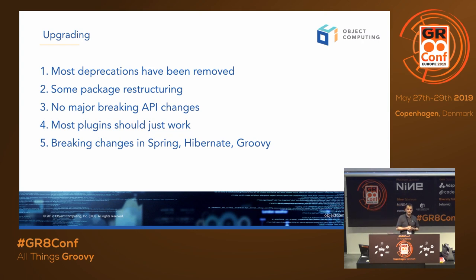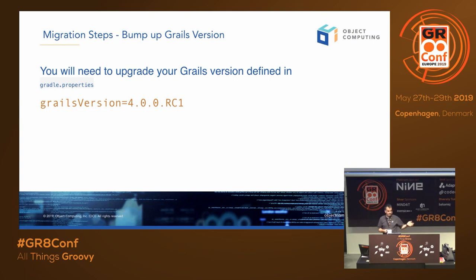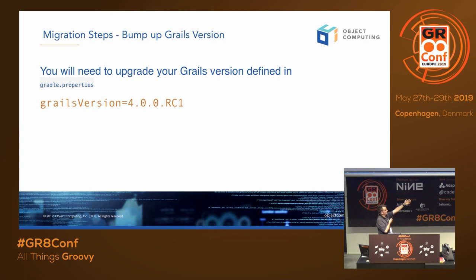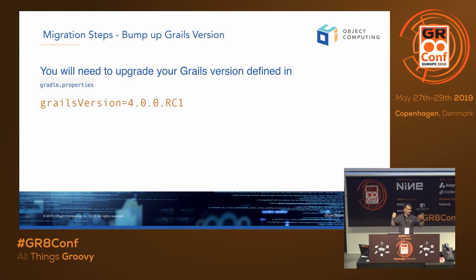Even if you use a Grails application without realizing Spring is being used, it is used. The first thing you'll need to change is your gradle.properties file — you should have one in the root of your project with the Grails version specified, probably something like 3.3.9 or 3.3.10 right now. You just set the version to the release candidate, or to the final release when it comes. That will automatically upgrade the Grails BOM and all the Spring dependencies — you don't see the Spring dependency explicitly in the build.gradle, it comes from the Grails BOM.